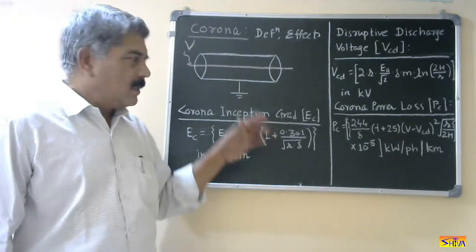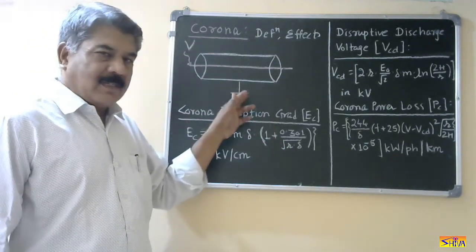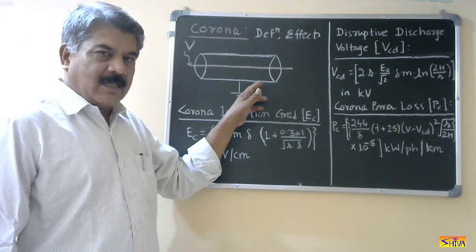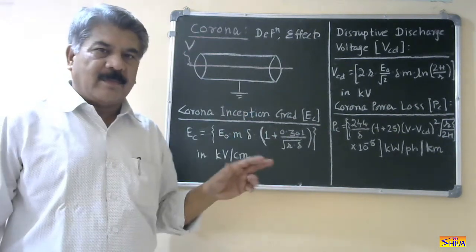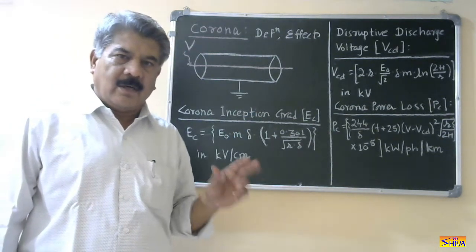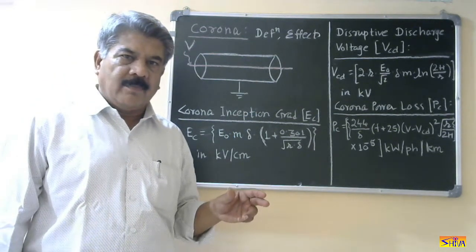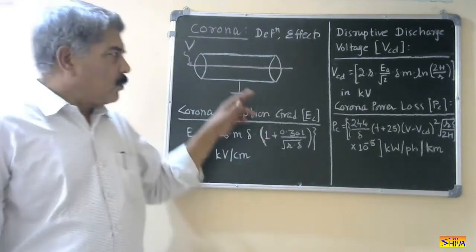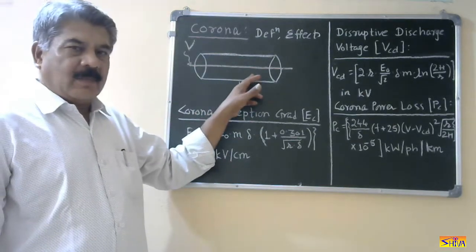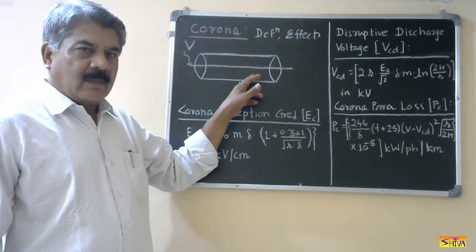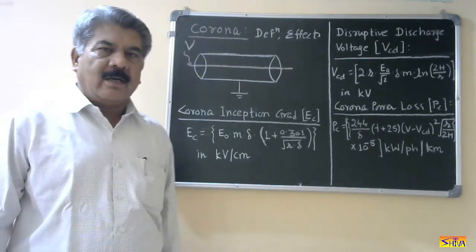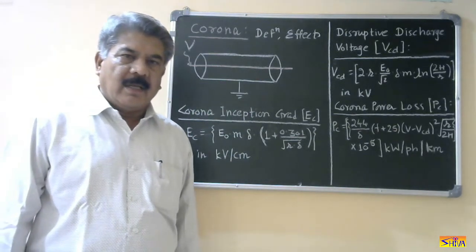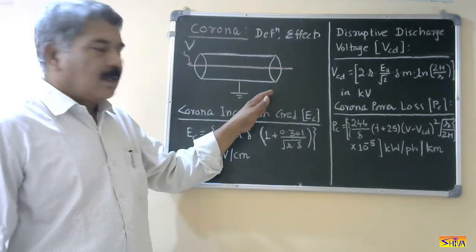So, this is a self-sustained discharge taking place over the surface of the conductor or electrode due to ionization of the air or gas surrounding the conductor or the electrode. That is corona.